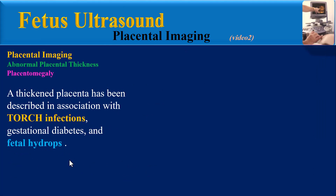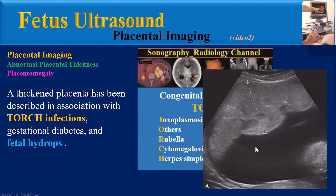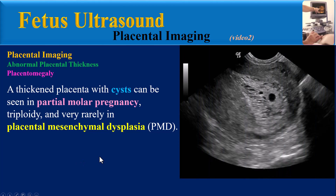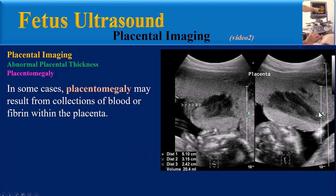A thickened placenta has been described in association with TORCH infections, gestational diabetes, and fetal hydrops. This anterior placenta measured about 7 cm at 28 weeks gestation; the fetus was hydropic in the setting of trisomy 21. A thickened placenta with cysts can be seen in partial molar pregnancy, triploidy, and placental mesenchymal dysplasia. In some cases, placentomegaly may result from a collection of blood or fibrin within the placenta.